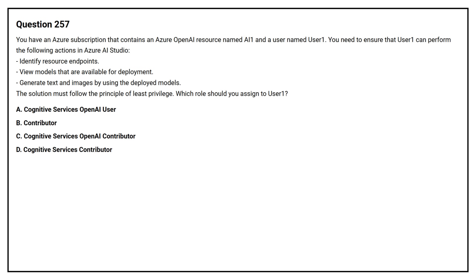Question number 257. You have an Azure subscription that contains an Azure OpenAI resource named AI1 and a user named User1. You need to ensure that User1 can perform the following actions in Azure AI Studio: identify resource endpoints, view models that are available for deployment, and generate text and images by using the deployed models. The solution must follow the principle of least privilege. Which role should you assign to User1? Option A: Cognitive Services OpenAI User.